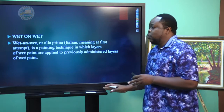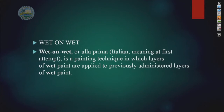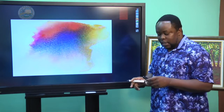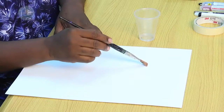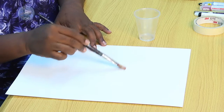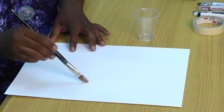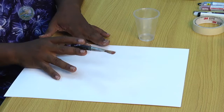We have another technique called wet-on-wet, or alla prima — Italian meaning for 'first attempt.' It is a painting technique in which layers of wet paint are applied to previously administered layers of wet paint. I'll take you to another section of the studio to demonstrate it. For the wet-on-wet technique, you need first to saturate your surface with water using your brush. The paper is now saturated.